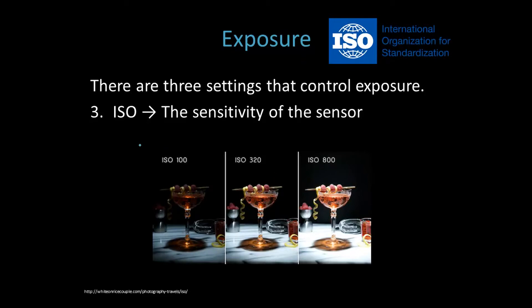The last thing that affects exposure is the ISO. ISO is a standards organisation and one of the things they create standards for is the sensitivity of sensors. It is a simple number: ISO 100 is an eighth of the sensitivity of ISO 800. So if you have to expose for one second to correctly expose an image at ISO 100, you only have to expose for an eighth of a second at ISO 800. The smaller the number the better the quality of the image in terms of noise, but the higher the number allows you to work in lower light situations.